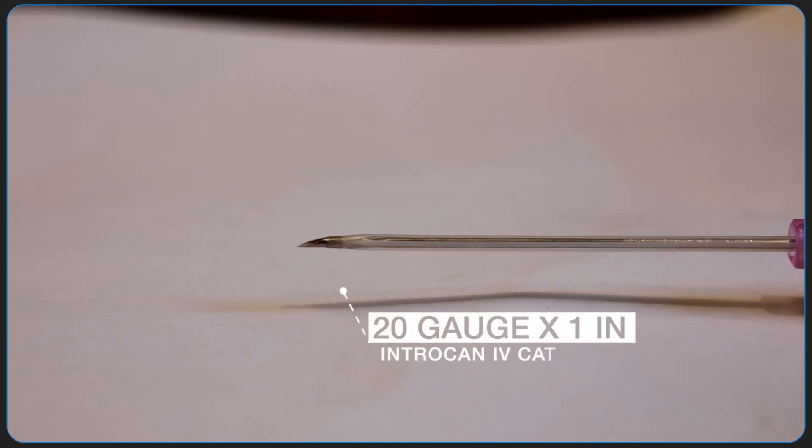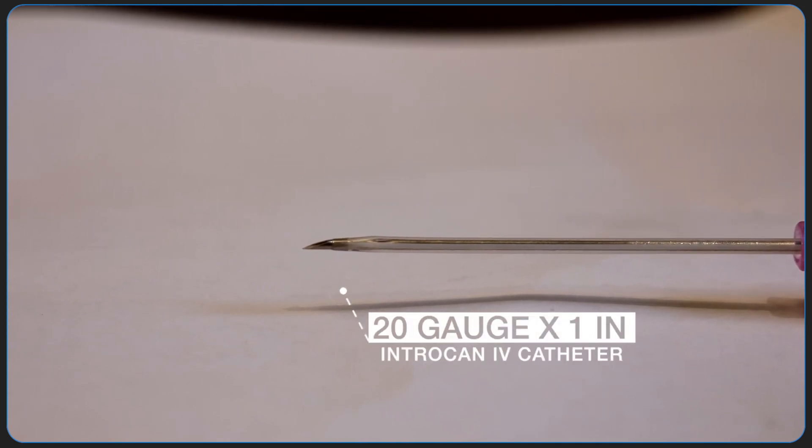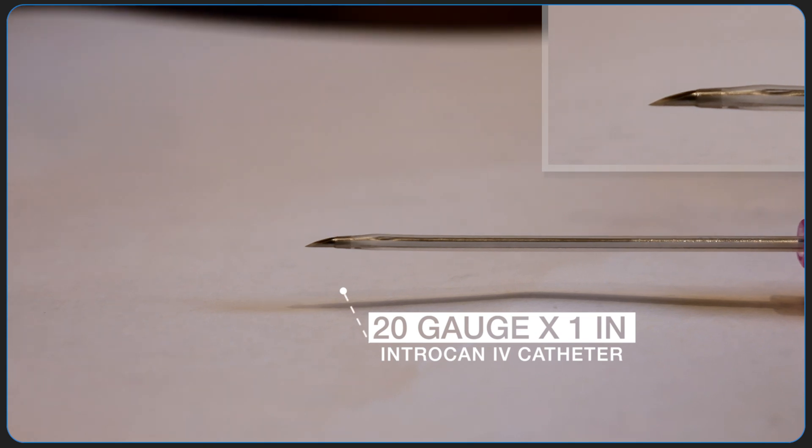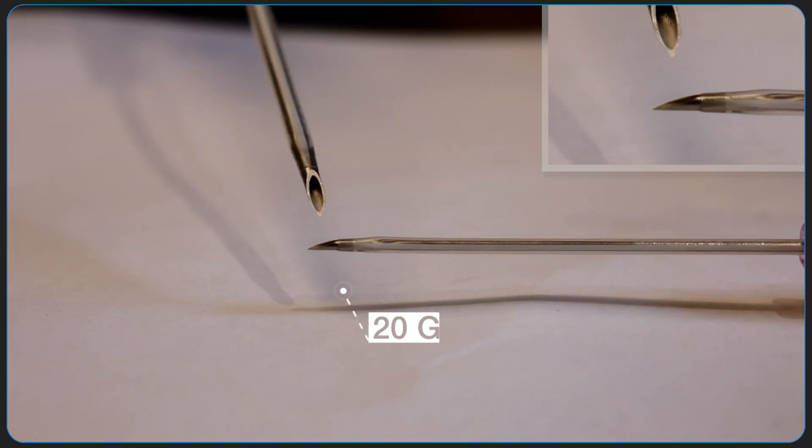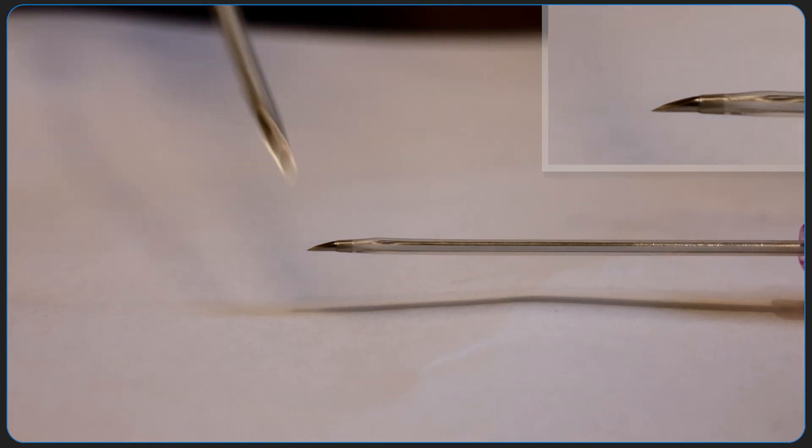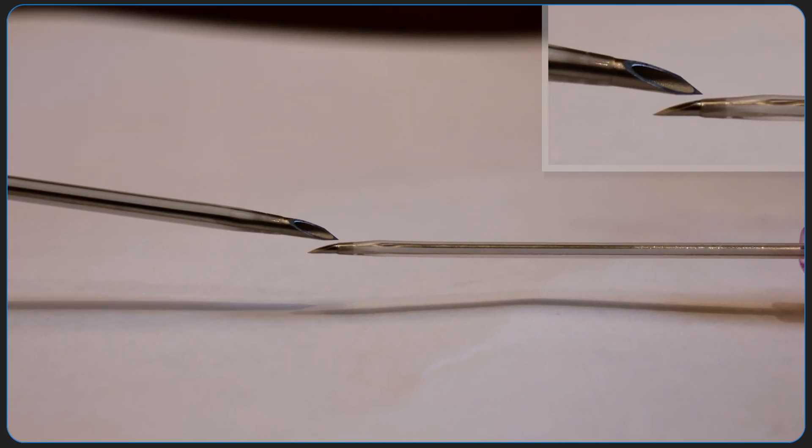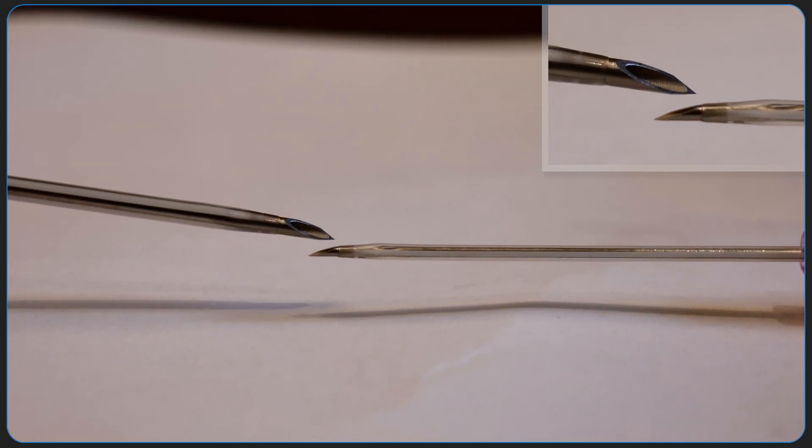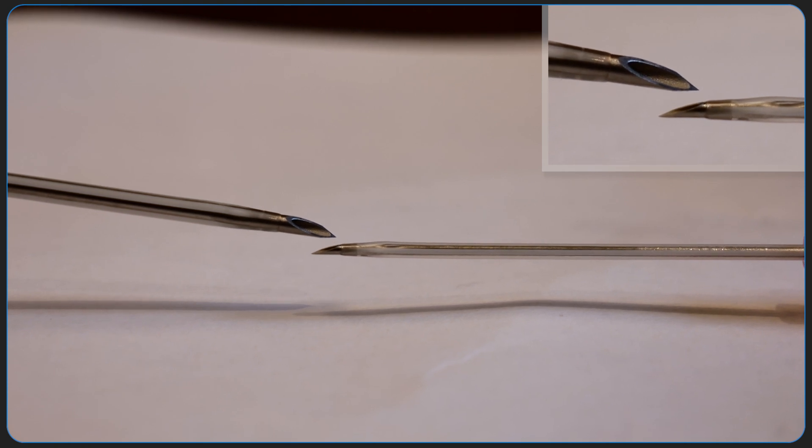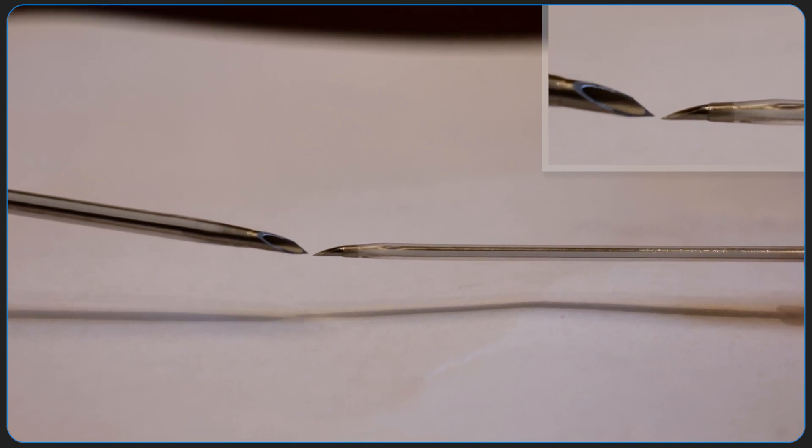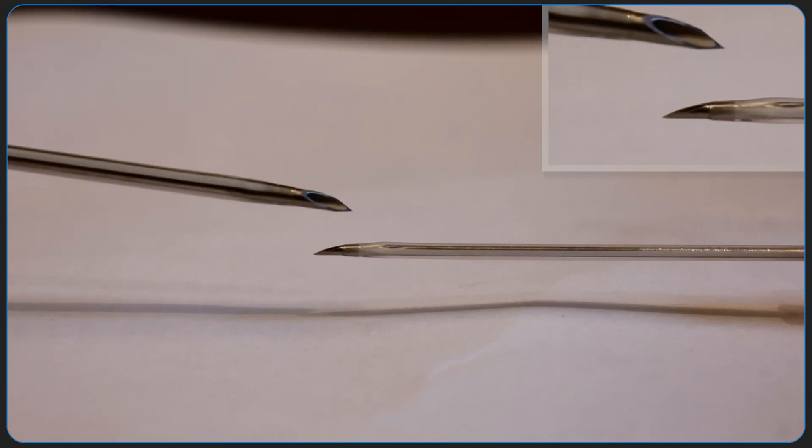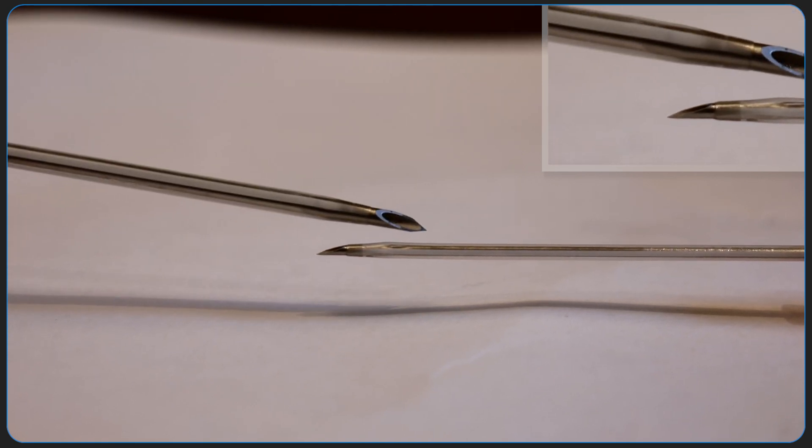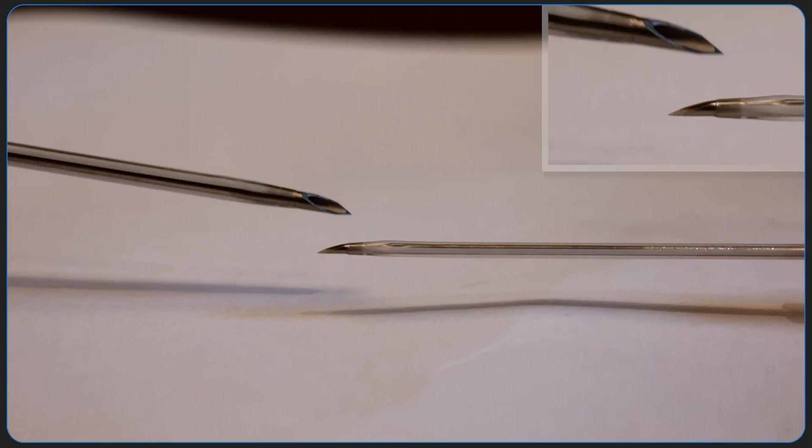It applies less to the little ones, like this 20 gauge. If you look, the bevel here extends only from here to here. Compared to this 16 gauge, it's much smaller. So it's much more forgiving. Because you can advance a little bit more without backwalling. And you don't need to advance very much before you can slide off the catheter.